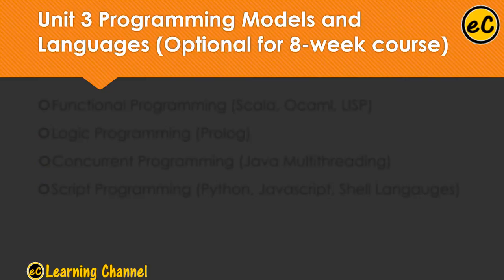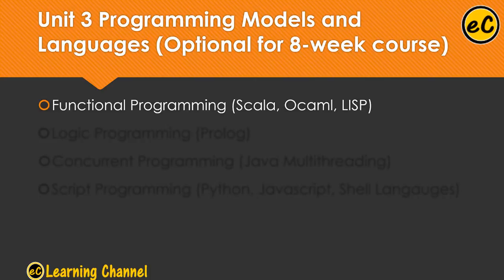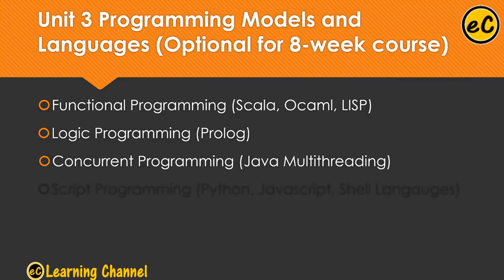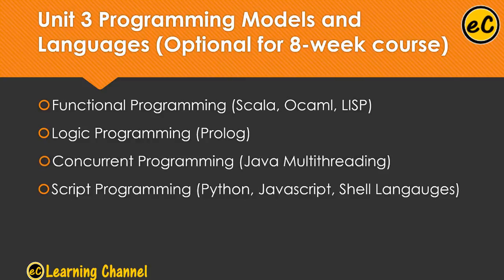In Unit 3, we will review different programming models other than the Von Neumann machine model. This part is optional for an 8-week course, as 8 weeks is too short to complete it. We will introduce functional programming, emphasizing scalar programming and possibly OCaml or LISP. We will show you logic programming using the language Prolog with the software SWI-Prolog, and concurrent programming using Java multi-threading. Finally, we will cover scripting programming, mainly Python, and possibly touch on JavaScript and shell languages.